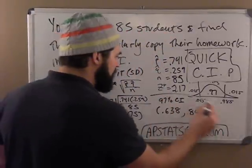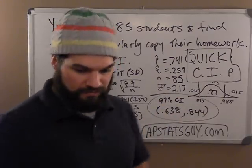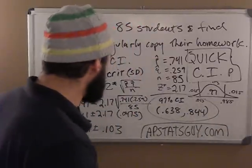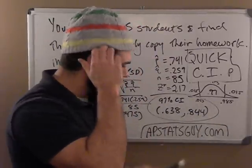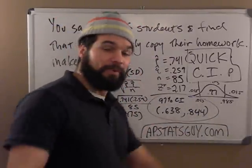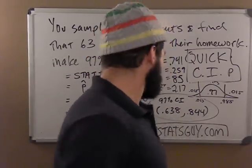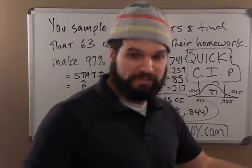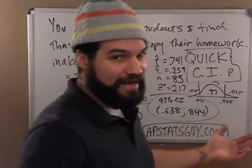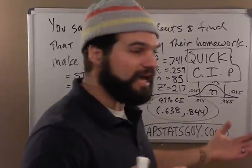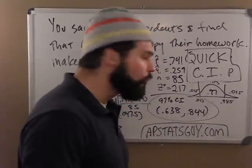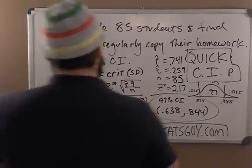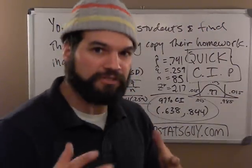So I can say that I'm 97% confident that the true proportion of students who copy their homework regularly is between 64% and 84%. So it's most likely that. But it might not be. Maybe only 60% do. Or maybe 90% do. I don't know. I'm not super confident. Well, I'm 97% confident. That's pretty confident. But I'm not like 99.99999% confident. But if I was that, it would be somewhere between 40 and 100. So I wouldn't really tell you how much. But anyway, hopefully that helps you do a confidence interval.